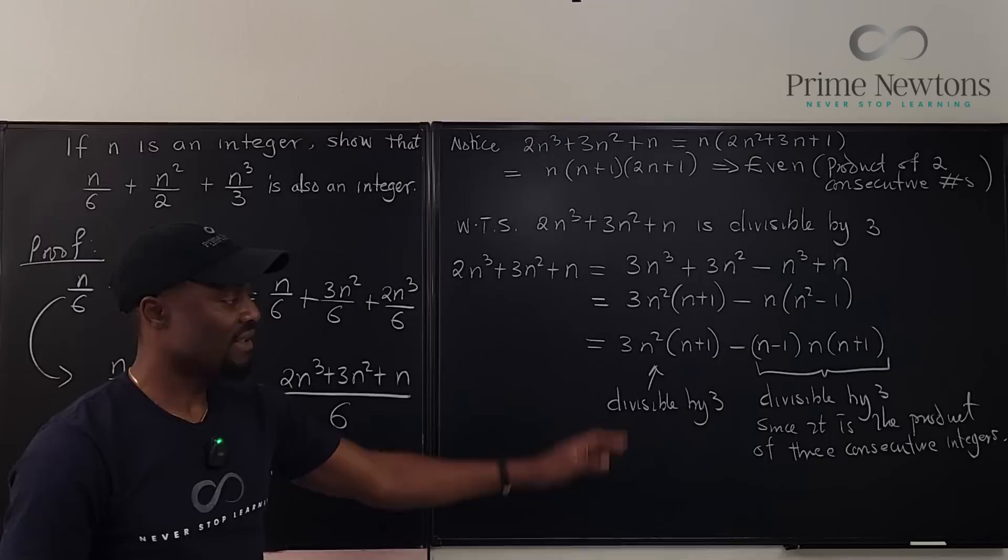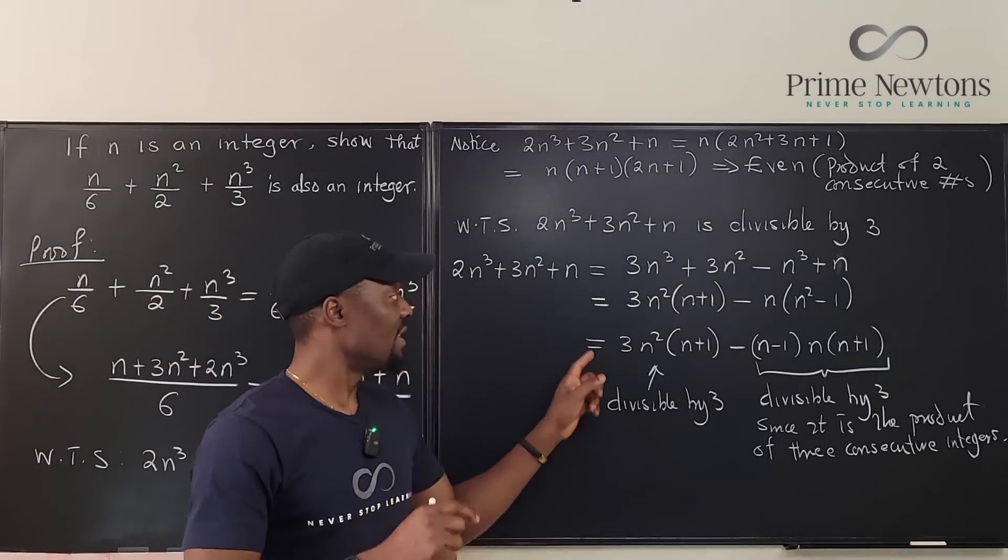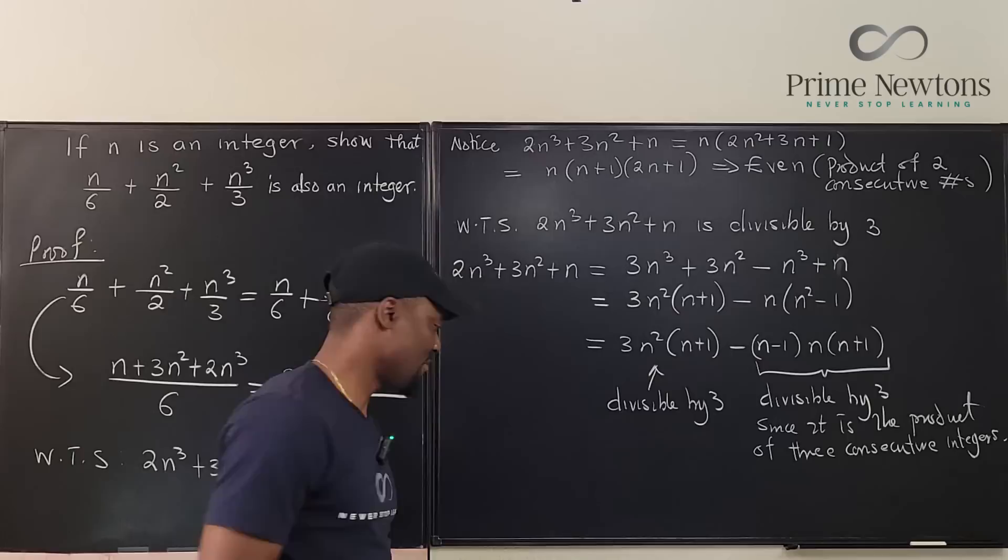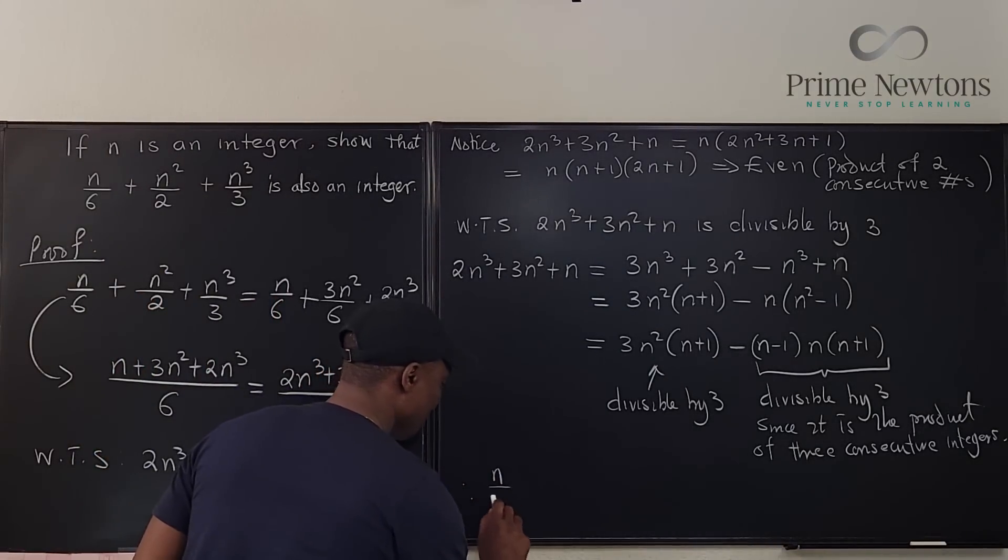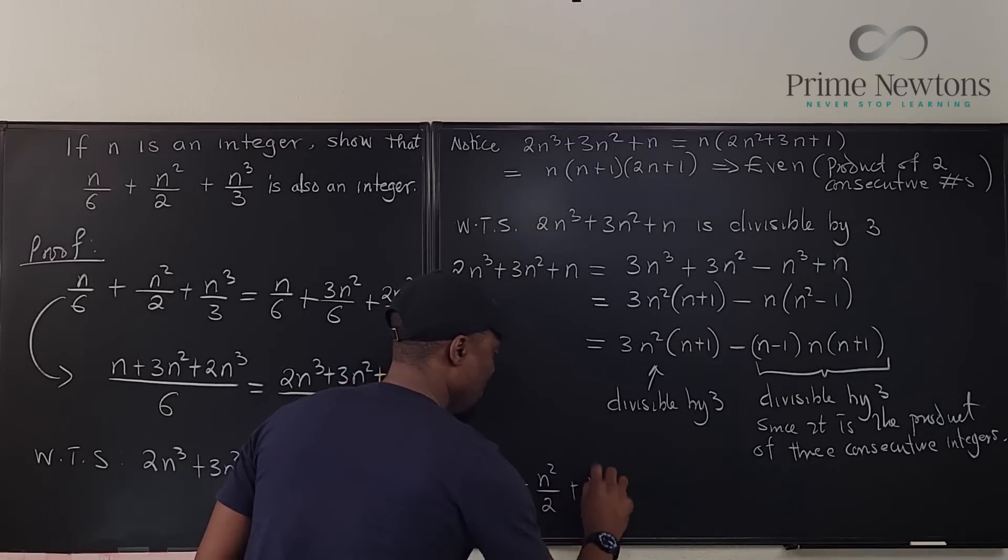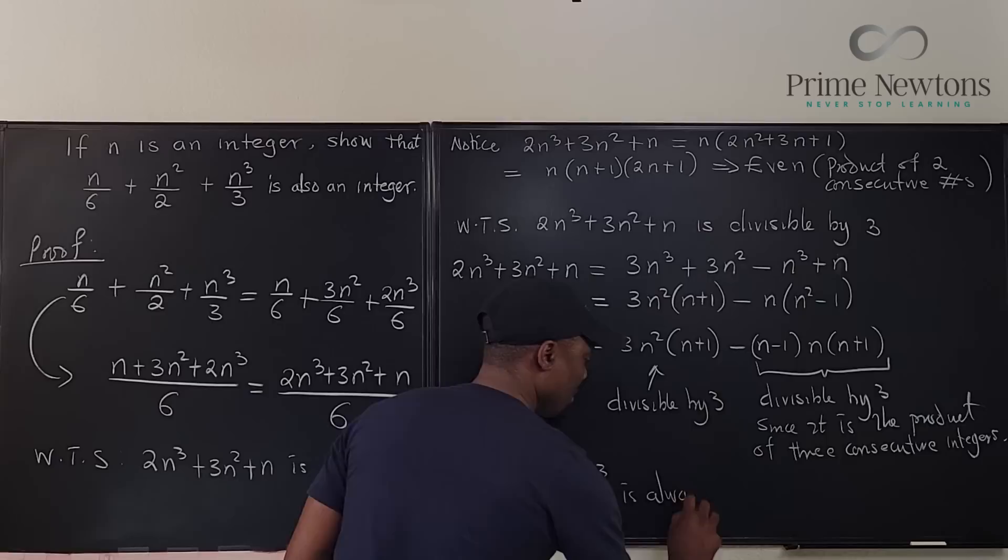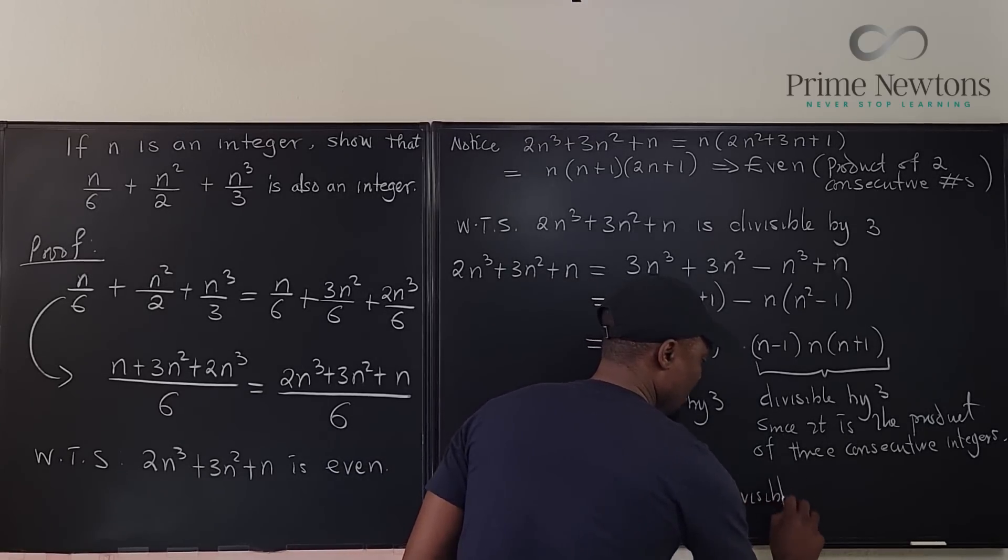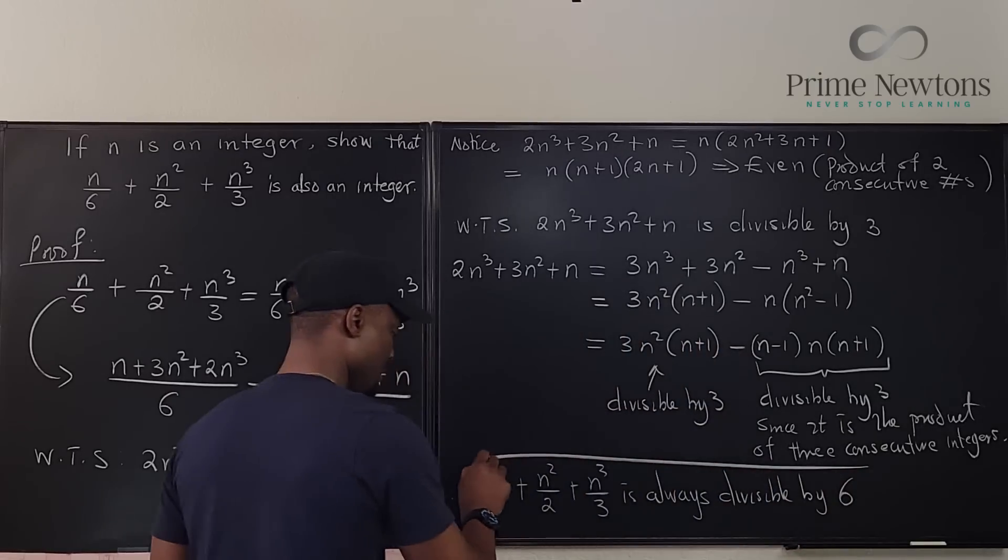Because we have shown that this is divisible by 2 and divisible by 3, then it is automatically divisible by 6. Therefore, n over 6 plus n squared over 2 plus n cubed over 3 is always divisible, always an integer.